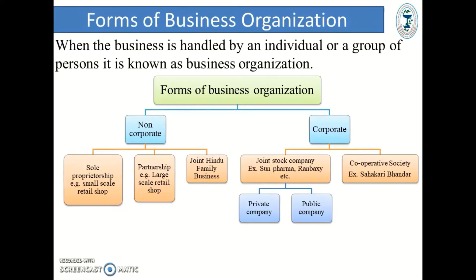Forms of Business Organization. When the business is handled by an individual or group of persons, it is known as business organization. Business organization is classified into non-corporate and corporate. Non-corporate includes sole proprietorship (e.g., small-scale retail shop), partnership (large-scale retail shop), and joint Hindu family business. Corporate is divided into joint stock company (e.g., Sun Pharma, Ranbaxy) and cooperative society (e.g., Sahakari Bhandar). Joint stock company is further divided into private and public company. Corporate types require registration under a particular act, while non-corporate does not.